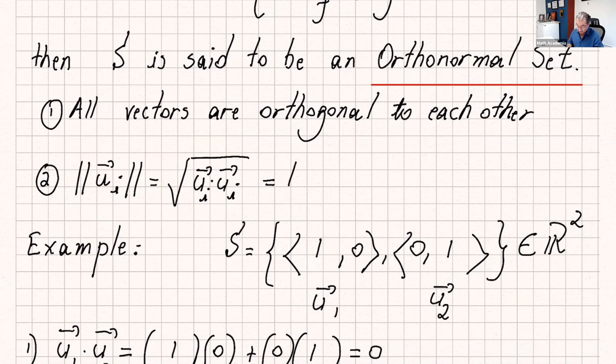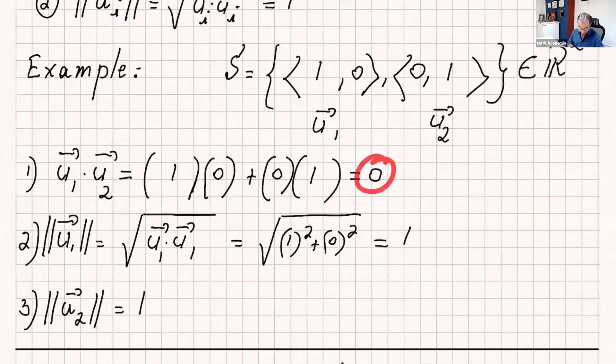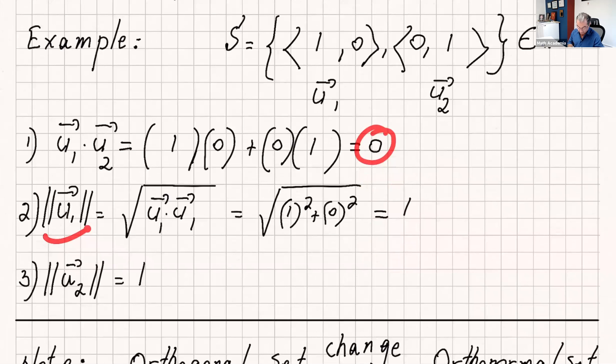An example, I did take a little example here. This is just the standard set in R². That's our first vector, that's our second vector. If you do u1 dot u2 then you get zero. And if you find the norm of u1, you can use that formula or just the formula for the magnitude, you get one. And the same way if you find the norm of u2, you get one.